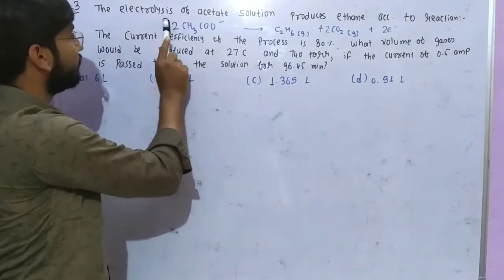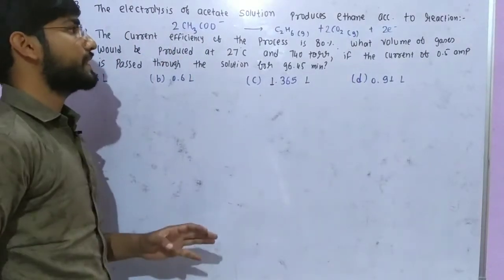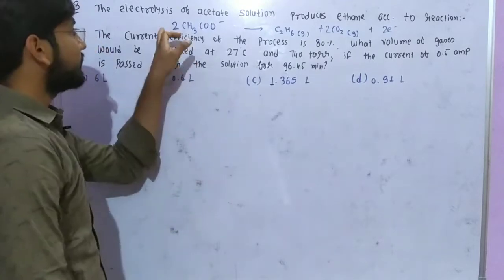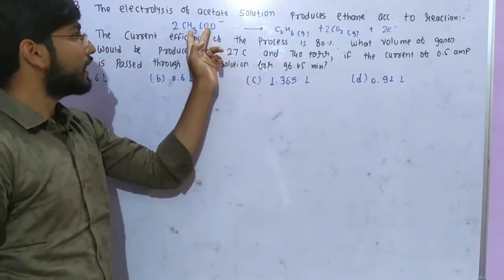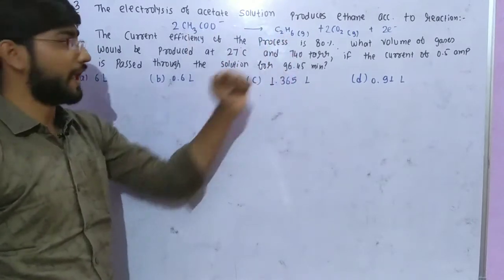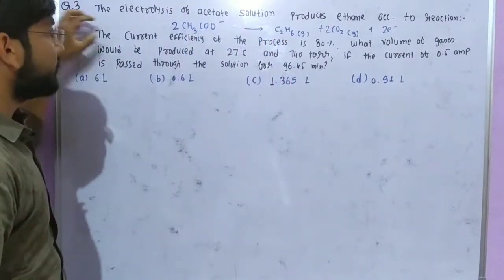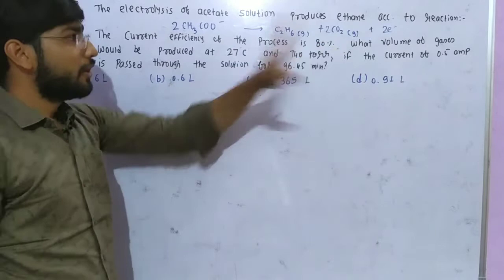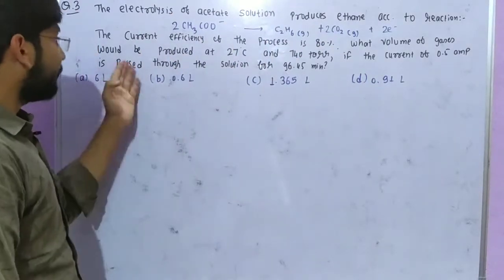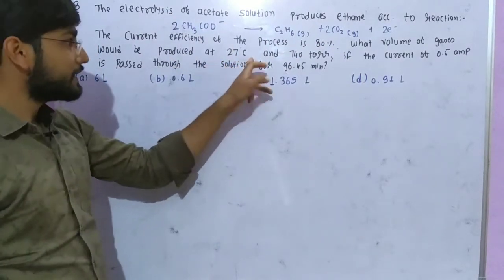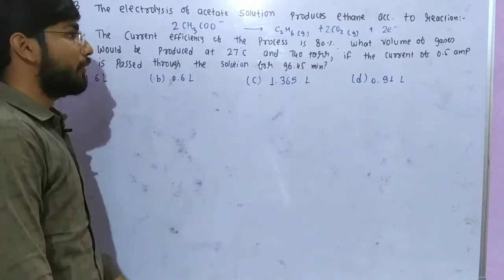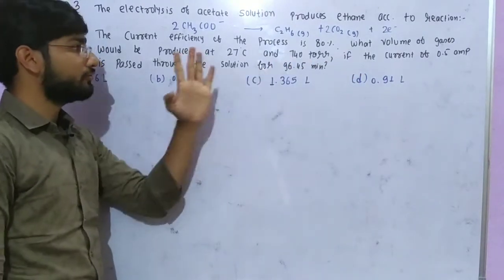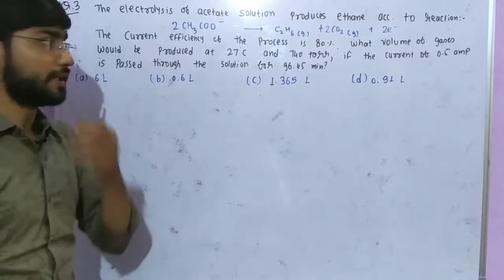Here is the question. The electrolysis of acetate solution produces ethane according to reaction. This is the complete reaction where ethane is produced. The current efficiency of the process is 80%. What volume of gases would be produced at 27 degrees Celsius and 740 torr pressure if the current of 0.5 ampere is passed through the solution for 96.45 minutes.